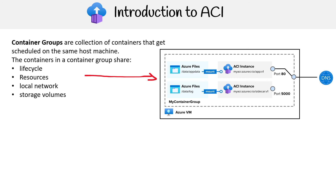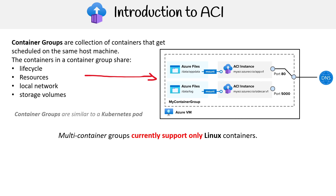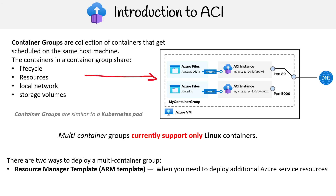Underneath all of that, it is running on an Azure virtual machine. Container groups are similar to Kubernetes pods — similar to, but not really the same thing. Multi-container groups can currently support only Linux containers, which is kind of a bummer, but that's just what it is. There are two ways to deploy a multi-container group: you can use ARM templates when you need to deploy additional Azure service resources, or just a YAML file when your deployment only includes container instances.